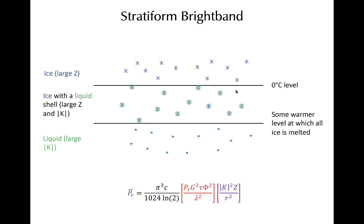In visual form, consider falling ice hydrometeors above the zero degree sea level that have large z but small k. As they melt, they initially retain their size but are surrounded by a shallow liquid water. The dielectric constant important at this point is that of water, but the backscattering cross section is still large. Eventually, the ice completely melts, and we are left with a distribution of denser, completely liquid drops with large k, with smaller backscattering cross sections in the melting layer. Thus, locally, between the altitudes just above and below this zero degree sea level, the maximum reflectivity is found where the melting is occurring.